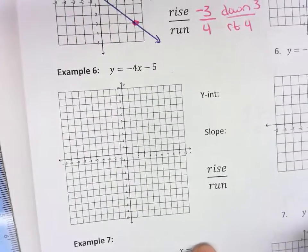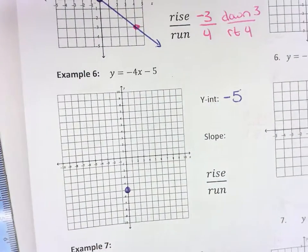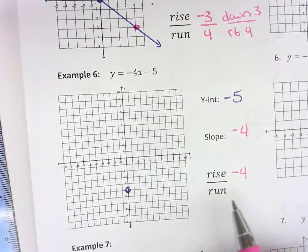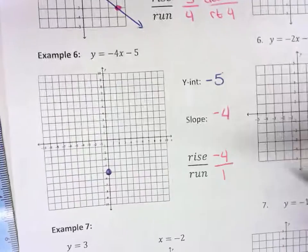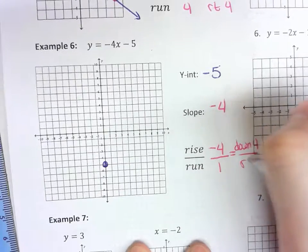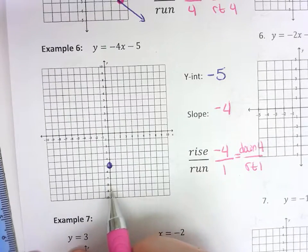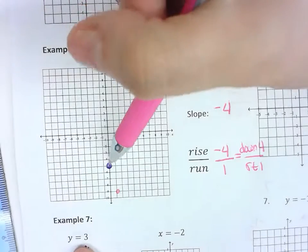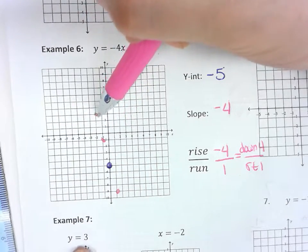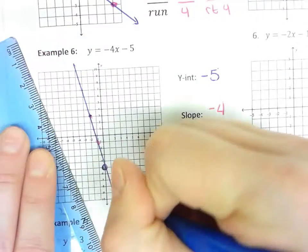Example 6: the y-intercept is negative 5 — that's the constant, the number all by itself. Make sure you start at negative 5, not positive 5. My slope is negative 4, and it's a whole number with no fraction, so divide it by 1. Negative 4 divided by 1 is still negative 4. With a negative rise, go down 4 units and then over to the right 1. To go the other way, up 4 and to the left 1. Get two points in each direction if they fit. Take your points, connect them with your ruler, all the way through the graph.